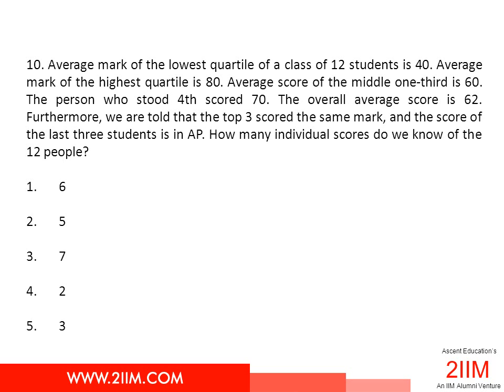Let's read this question. The average mark of the lowest quartile of a class of 12 students is 40. Average mark of the highest quartile is 80. Average score of the middle one-third is 60. The person who stood fourth scored 70. The overall average is 62. Furthermore, we are told that the top three scored the same mark and the score of the last three students is in AP. How many individual scores do we know of the 12 people?